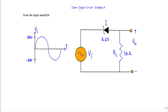In this video I will show you another example of a Zener diode clipper circuit. Here we have to draw the output waveform for the given clipper circuit. We are applying a sinusoidal voltage with positive maximum of +20V and negative maximum of -20V. This Zener diode has a breakdown voltage Vz equal to 6.2V. We are taking the output across the load resistor RL of 1 kilo ohm.